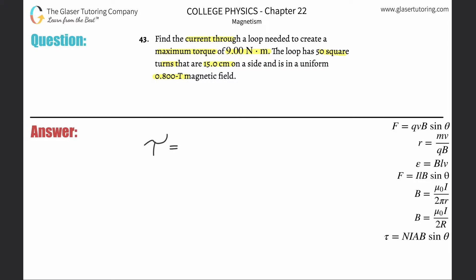Torque on a current-carrying wire equals the number of turns (N) multiplied by the current (I) multiplied by the area (A) multiplied by the magnetic field strength (B) multiplied by the sine of the angle between the magnetic field and the normal of the area. What's the normal? Check out number 42.